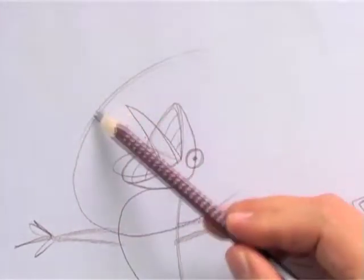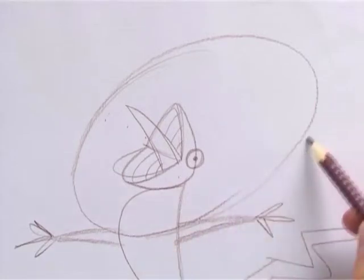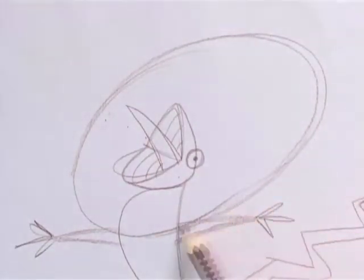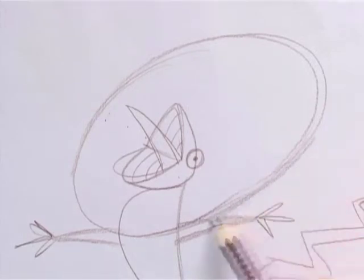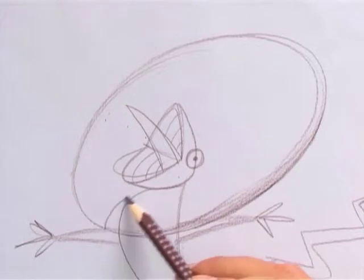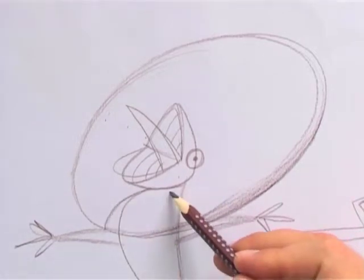Then finally comes the frilled neck itself. It sits like a disc around the neck of the lizard, and I advise that you take your time sketching it lightly until you get it right. Notice that there is a fold under the lizard's chin.